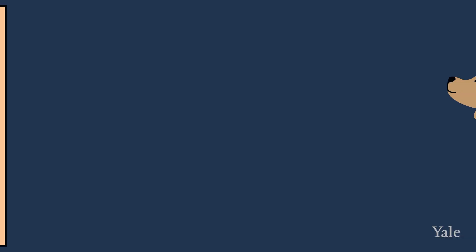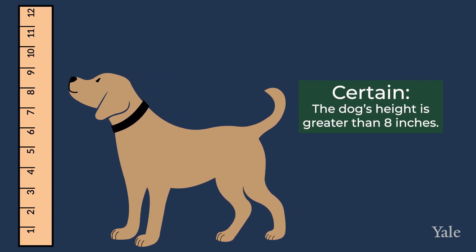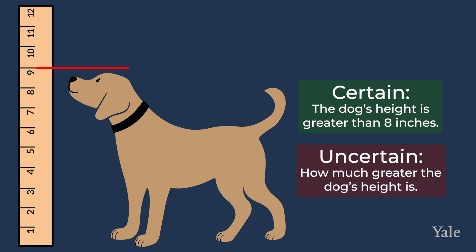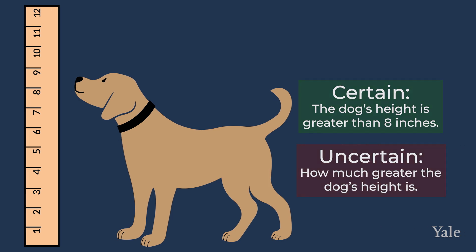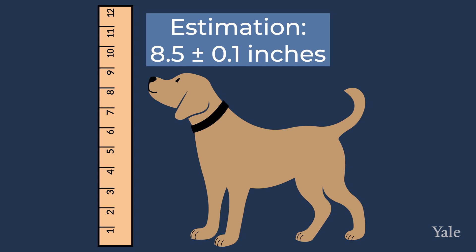For example, if you're measuring the height of a dog with a meter stick that only has tick marks for each inch, and your little dog is just a little taller than eight inches, then you're certain that the dog's height is more than eight inches, but you're uncertain about how much more. So you estimate that your dog is 8.5 inches tall. The 0.5 in 8.5 is the first uncertain digit, so we assume that the dog's real height is 8.5 inches plus or minus 0.1.